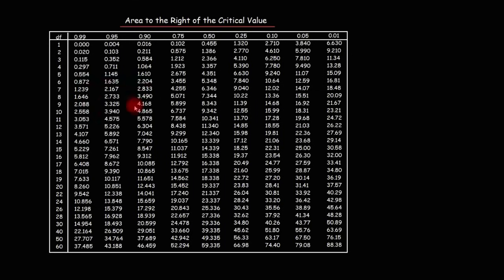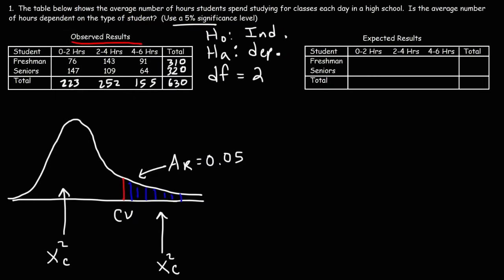Here is the chi-square distribution table. We had two degrees of freedom, and the area to the right of the critical value is alpha 0.05. That gives us a critical value of 5.99, so our CV is 5.99.